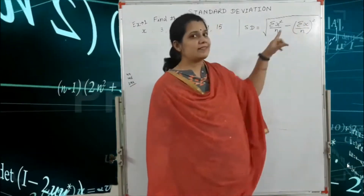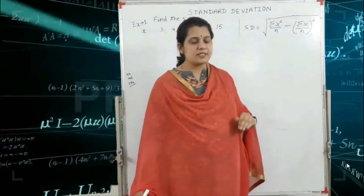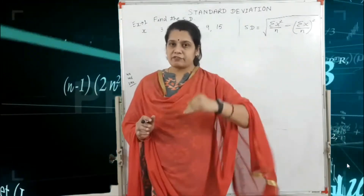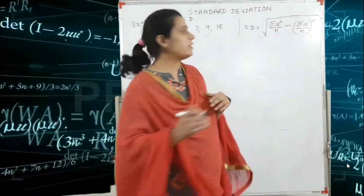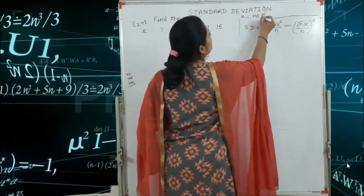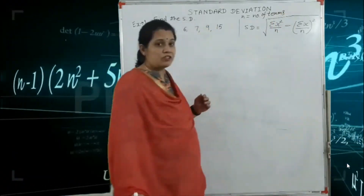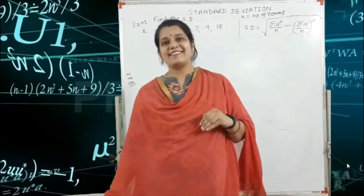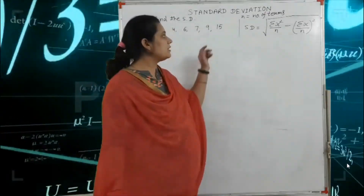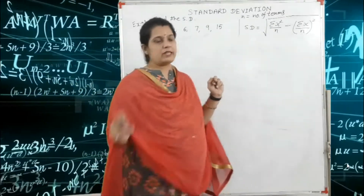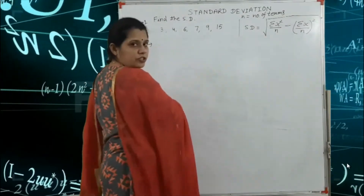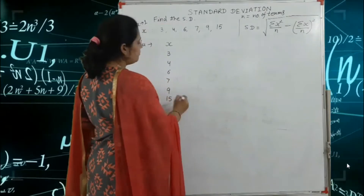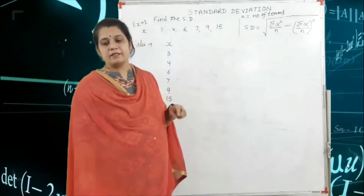What do we mean by summation x upon n whole square? First find the sum of the x column — that gives summation x. After that divide by small n, where small n means number of terms. So the solution: the value of x is 3, 4, 6, 7, 9 and 15. According to our formula we build the table.